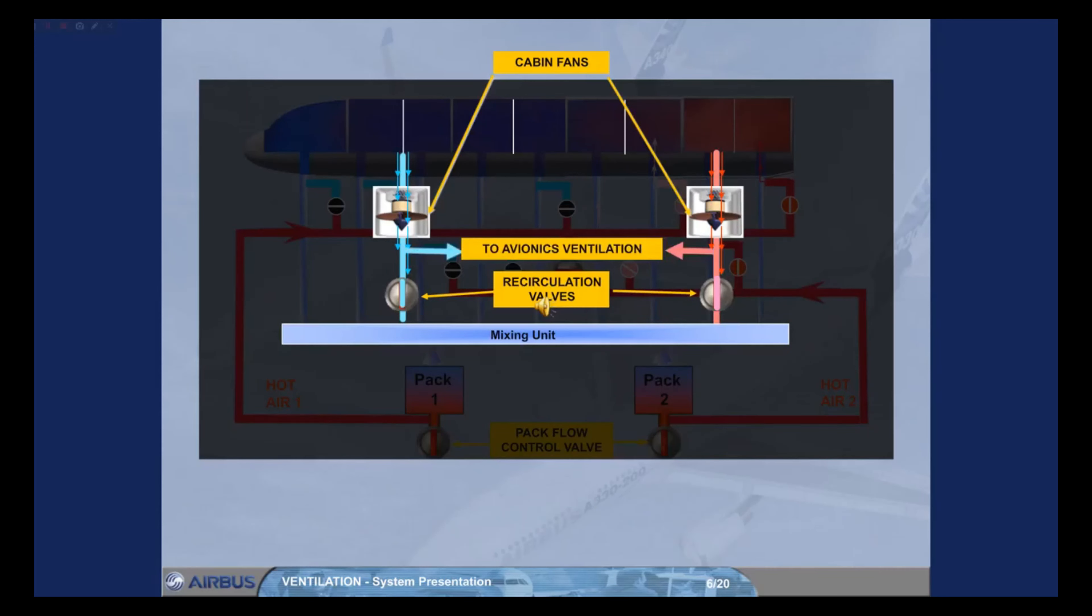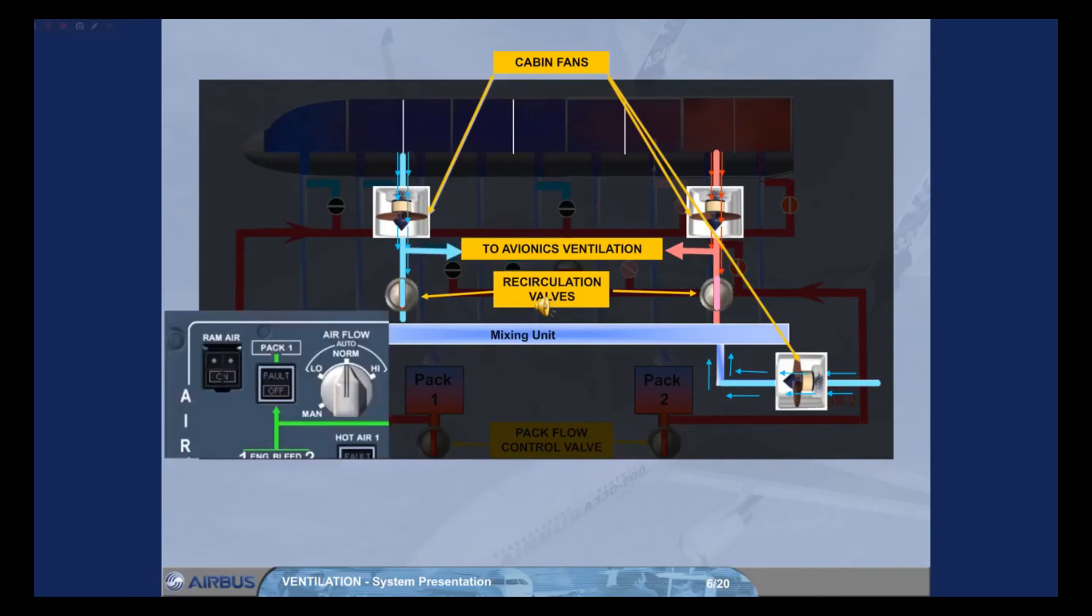The cabin fans run continuously as long as the aircraft electrical system is supplied. The recirculation valves will partially close when both packs are off in order to ensure sufficient airflow to the avionics system. On a 340-600, a third cabin fan blows air to the mixing unit. All cabin fans run at a variable speed according to air management system demand, except when the airflow selector is set to manual.